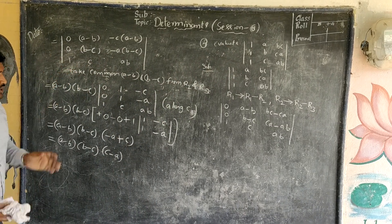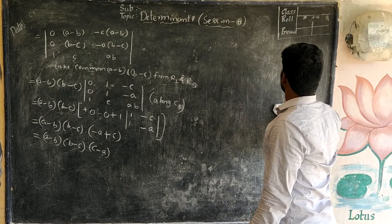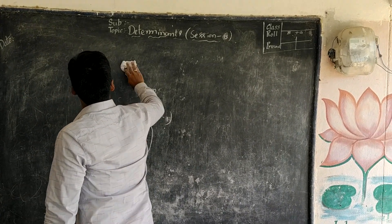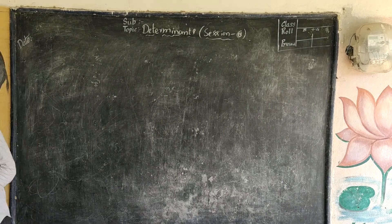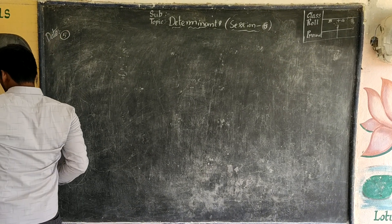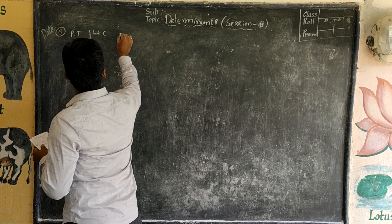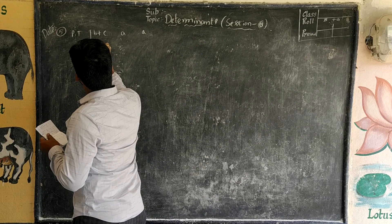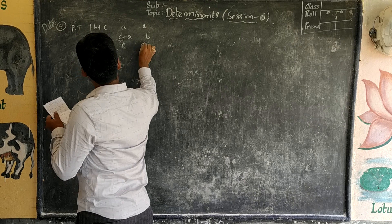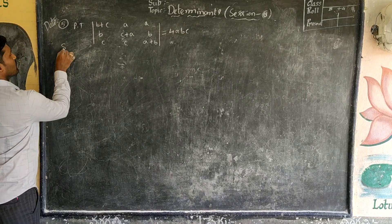Now the next question: Prove that the determinant of (b+c, a, a / b, c+a, b / c, c, a+b) is equal to 4abc.